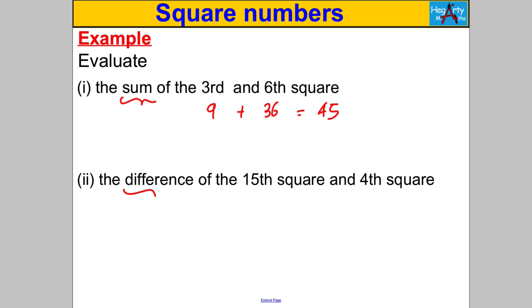They've asked us the difference, so that means to subtract between the 15th square and the fourth square. The 15th square is 15 multiplied by 15 which is 225, and the fourth square is 4 multiplied by 4 which is 16. So we subtract those and get 209. Done. Let's try another question.